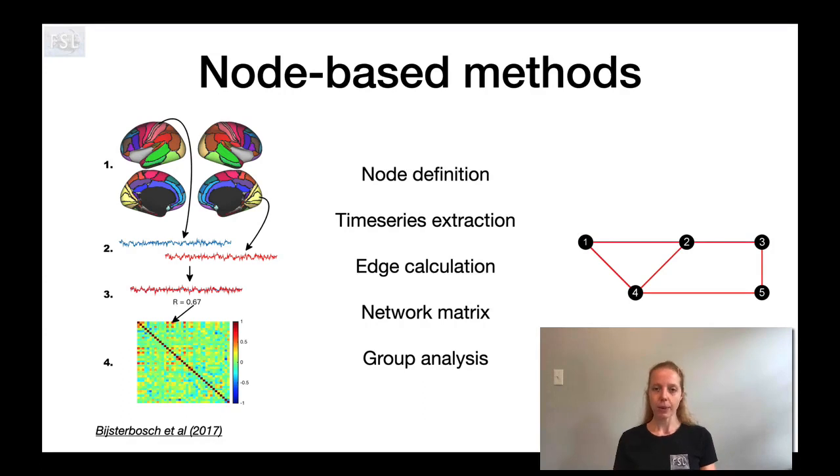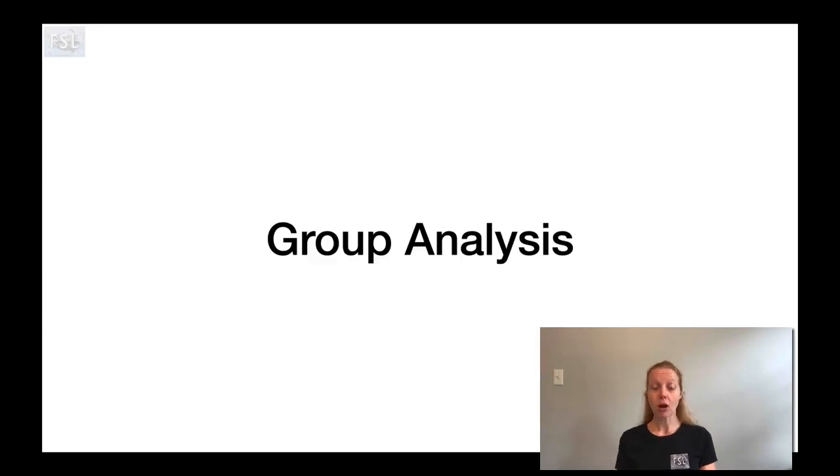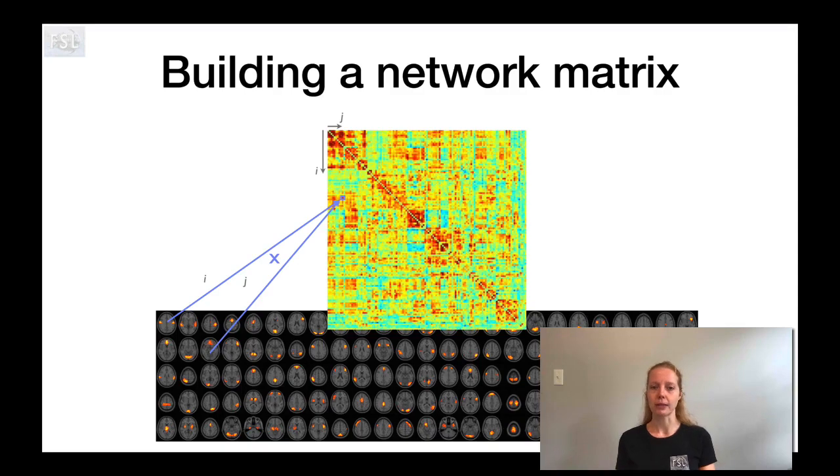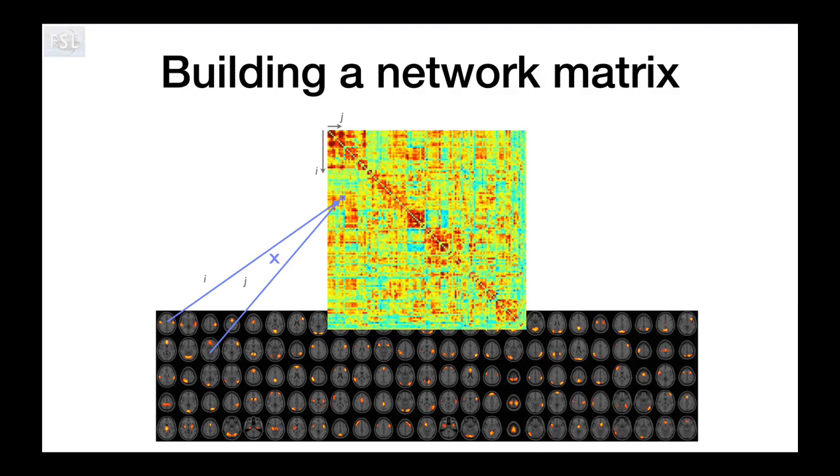So let's talk a little bit more about group analysis, and first of all let's make sure that we understand what a network matrix looks like. This is commonly what you get out of any type of node-based method including network modeling analysis, which is a node-by-node matrix. The number i and the number j is the same usually and it's equal to the number of nodes that you've defined.